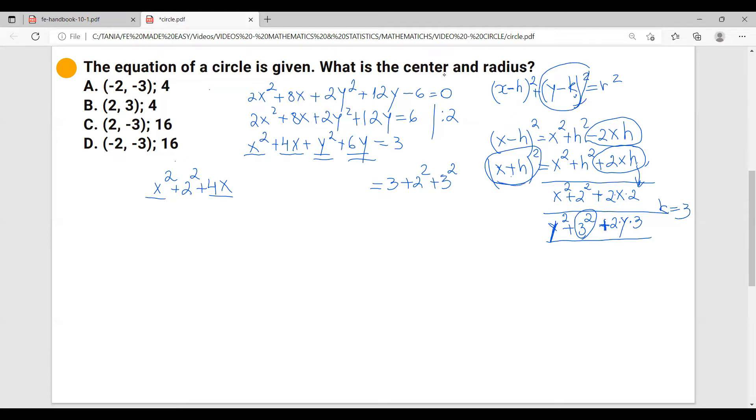It's going to be positive. So let's continue this. I add y² + 3² + we have 2 times 3, 6y = 3 + 2² + 3².